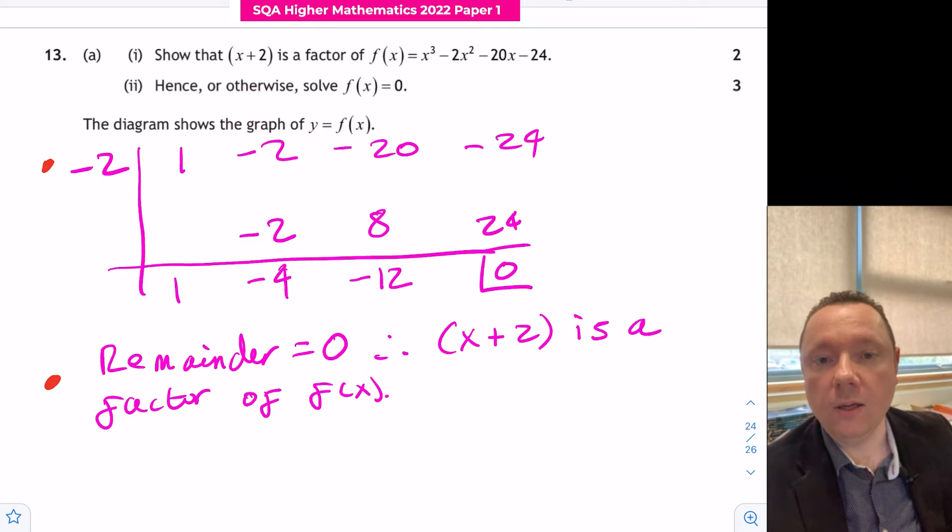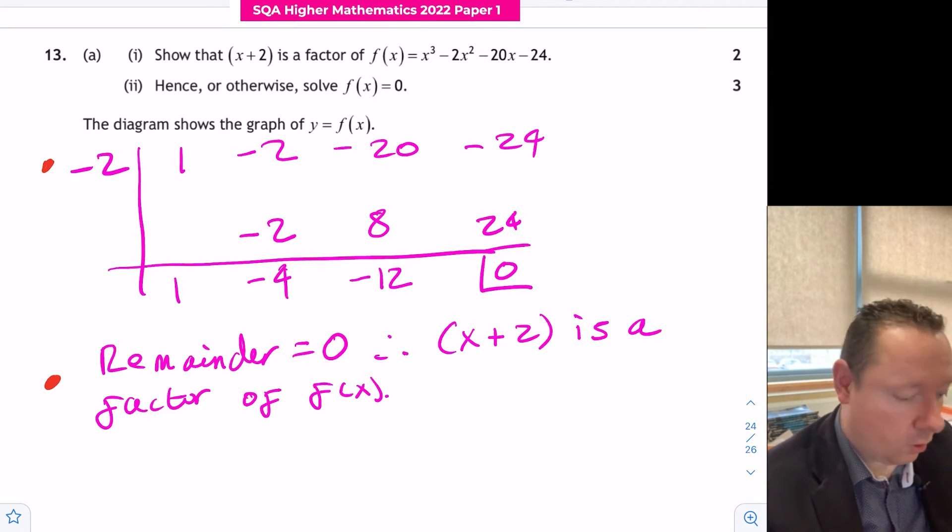That gives us our second mark for completing the division and making our statement. If you had done it the other way by substituting minus 2 in directly, you would still get an answer of zero, but you would say that since f of minus 2 equals zero, x plus 2 is a factor. Same way.